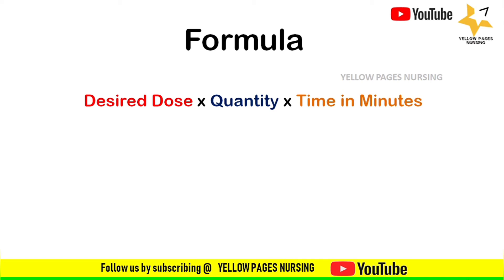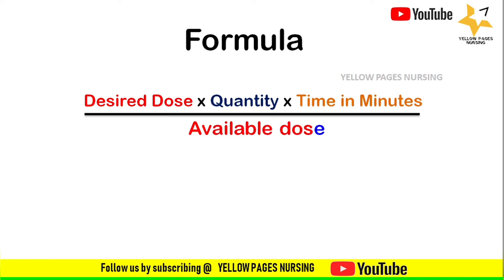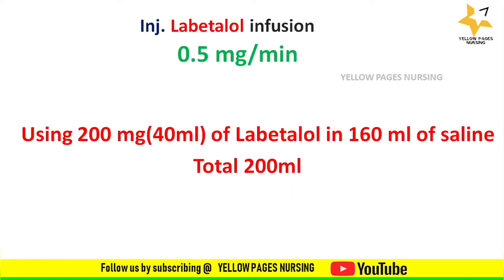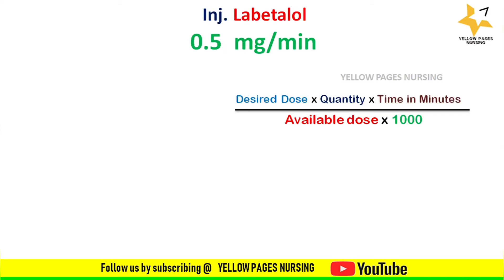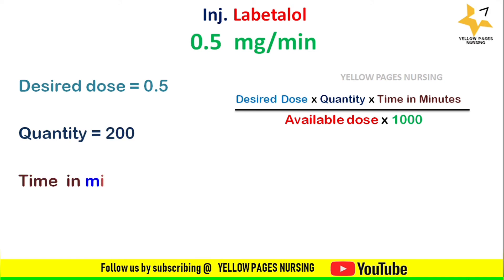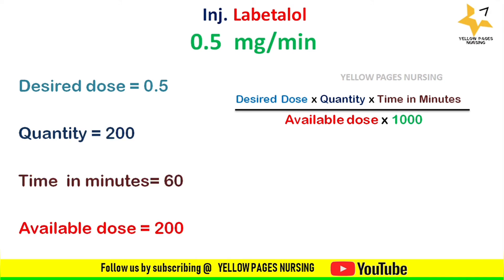As per the formula: desired dose multiplied by quantity multiplied by time in minutes, divided by available dose, gives ml per hour. As per the example, the doctor's prescription is injection labetalol infusion 0.5 milligram per minute, using 200 mg — that is 40 ml of labetalol in 160 ml of saline, total 200 ml. Desired dose is 0.5, quantity is 200, time in minutes is 60, and available dose is 200.